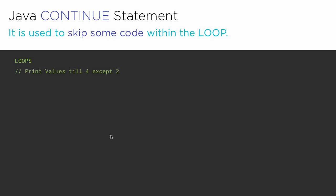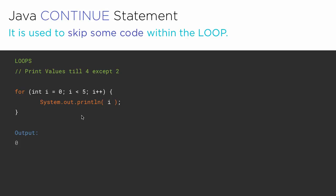Now suppose if I ask you: inside the loop, print all the values till integer 4 except 2. So except 2, print all the values such as 0, 1, 3, and 4 — not 2. For that, suppose if I have this loop — a very simple loop that prints the value 0 to 4, i.e. less than 5.